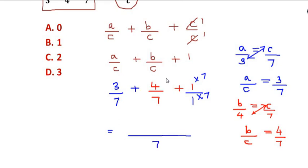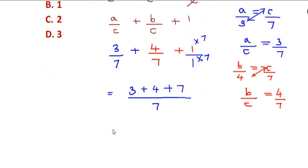So it becomes 3 + 4 + 7. This is nothing but 14/7, which is equal to 2.